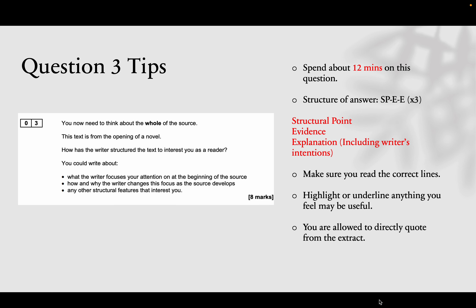Moving on to question three — this is a written answer where you have to have a structure, not just four statements like question one. This one is all about structure, and the question will be pretty much the same for every exam: 'How does the writer structure the text to interest you as a reader?' Make sure you're underlining all the structural features as you go through. If you don't find any, don't worry — you can pick one and expand on it. The structure for this one is SPEED times three: pick a structural point, your quote as evidence, then an explanation including the writer's intentions.